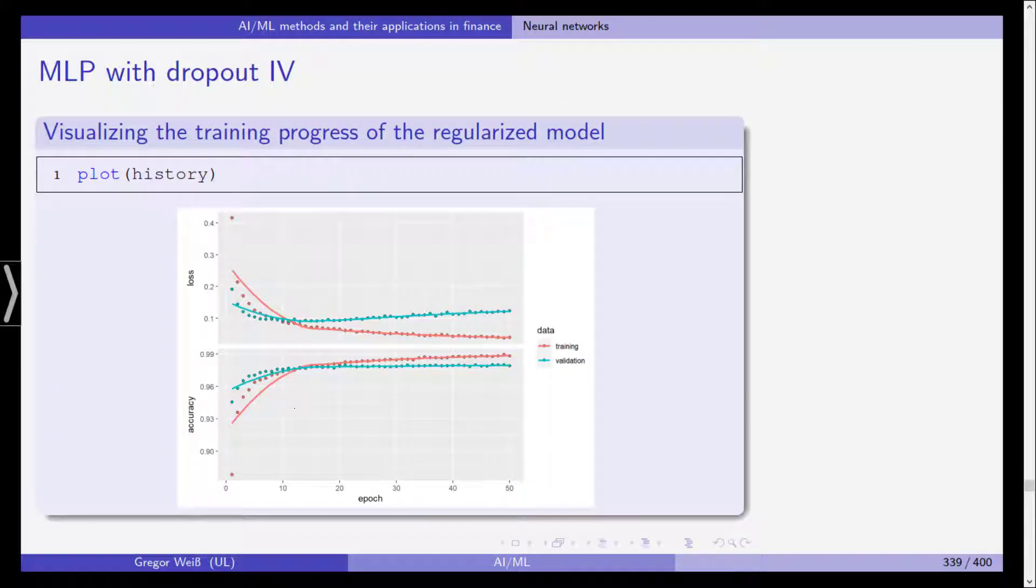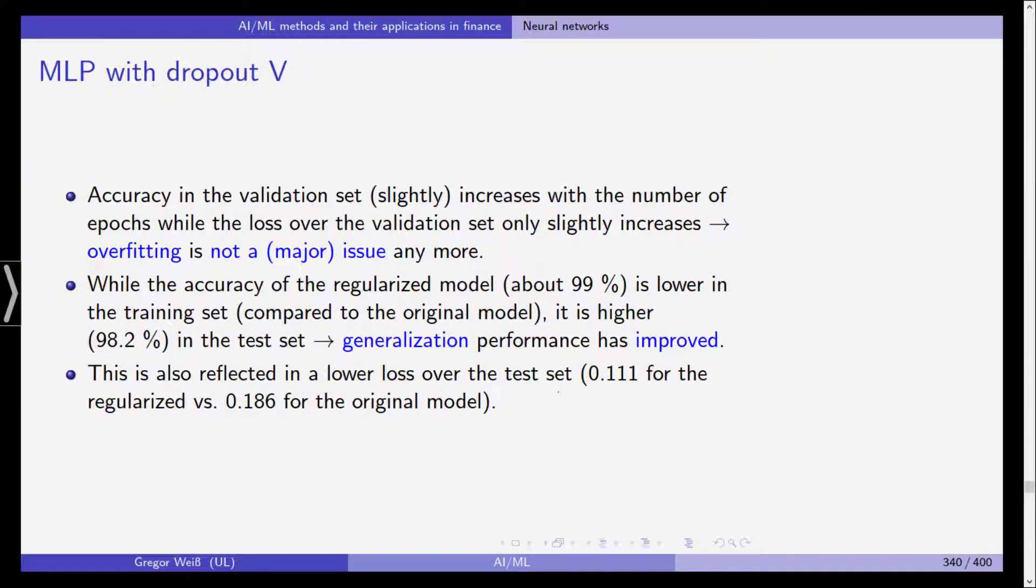As you can see, as before we have a drop in the loss at first and it still increases for the validation set but it doesn't increase like this. So actually this difference here and also this minimized difference between the accuracy in the training and in the validation set, these are the results of the regularization via dropout.